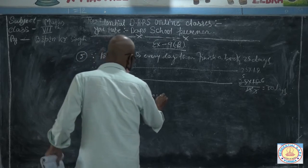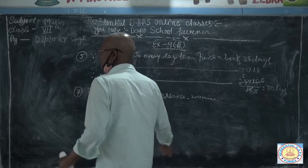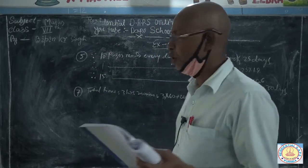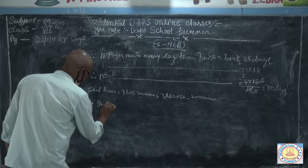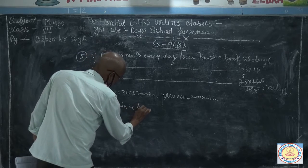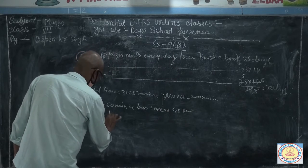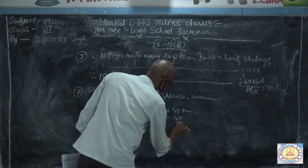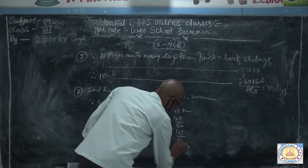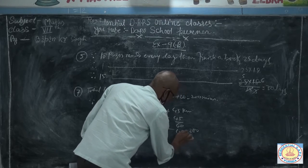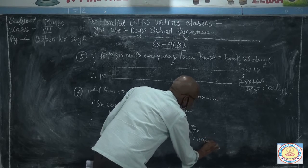First, change 3 hours 20 minutes into minutes: 3 into 60 plus 20 equals 200 minutes. At 45 km per hour, that means 60 minutes covers 45 km. So in 1 minute the bus covers 45 by 60 km, and in 200 minutes it covers 45 by 60 into 200, which equals 150 km. So the total distance is 150 km.